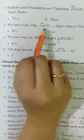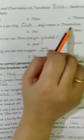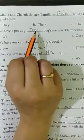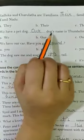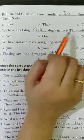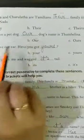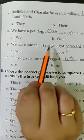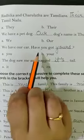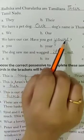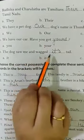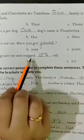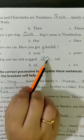We have a pet dog. Dash dog's name is Thumbelina — humare paas ek pet dog hai, uska naam Thumbelina hai. Toh 'our.' We have our car — have you got dash? Humare paas car hai, kya aapke paas hai? Toh 'yours.' The dog saw me and wagged dash tail — dog ne mujhe dekha aur apni tail hilai, pooch hilai. Toh 'its.'